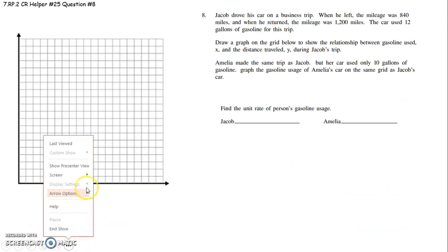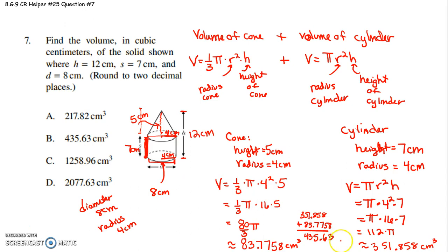Oops. Sorry. Oh, my goodness. Oh, my goodness. Centimeters cubed. There's the total volume. So, the volume of our cone was 83.7758 plus the volume of our cylinder was 351.858. And that got us to approximately 435.63 cubic centimeters.